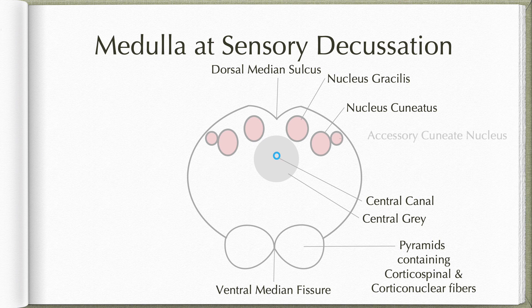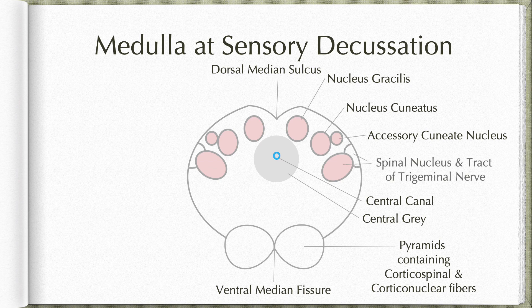Lateral to the nucleus cuneatus, we find a new nucleus known as the accessory cuneate nucleus, which we will discuss in the next part. Further laterally, we have the spinal nucleus and the tract of the trigeminal nerve.